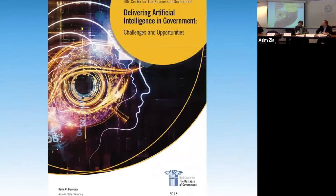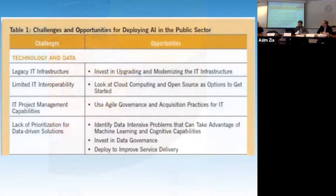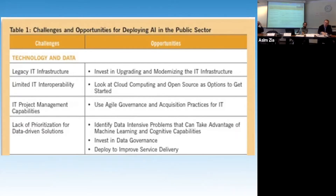There was a report that Kevin DeSouza wrote — he's in Australia right now for the IBM Center — and he provided a nice overview, a couple of years old, but he talked about the IT infrastructure. You might have heard about universal 5G — how the Chinese are getting some competitive advantage over the US in terms of fast infrastructure. If you happen to be in South Korea, you would see their internet speeds are already way faster than what we have here. So the legacy IT infrastructure is a challenge — how do you replace that?